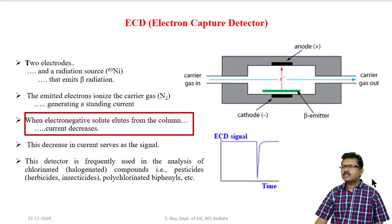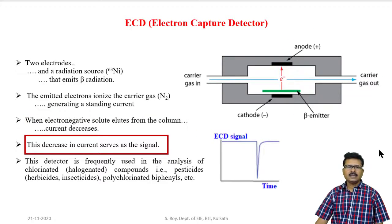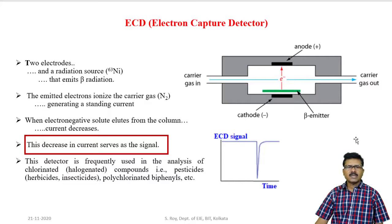When electronegative solute elutes from the column — a sample having electronegativity property — it enters into the cavity with the carrier gas. Due to its electronegativity property, it captures more electrons. So, electron flow from cathode to anode decreases, meaning fewer electrons flow inside the cavity. Therefore, current flow through the external circuit decreases. This decrease in current serves as the signal. If the concentration of the sample is higher, electron-capturing capacity is higher, so fewer electrons reach the anode and current flow will be lower. If the concentration is lower, current will be higher. The magnitude of the current gives the ultimate indication of the concentration of the sample.